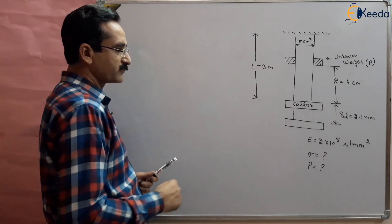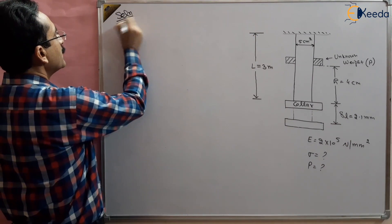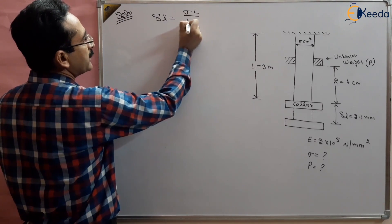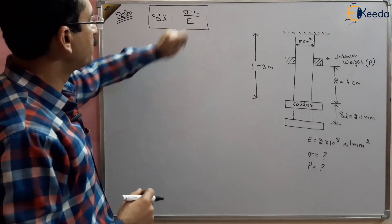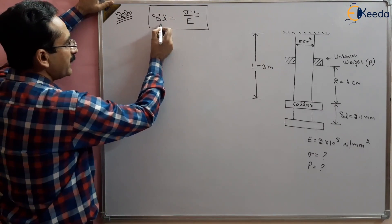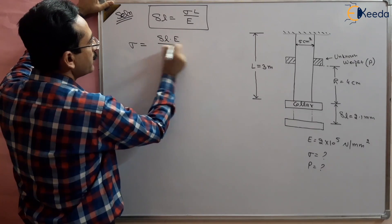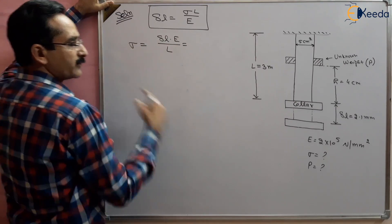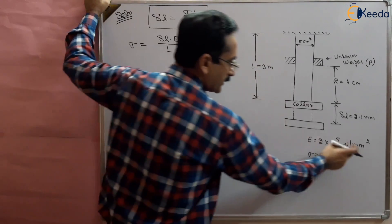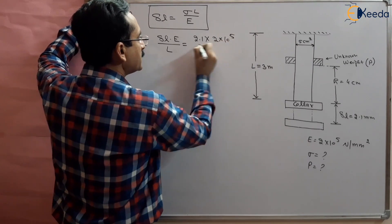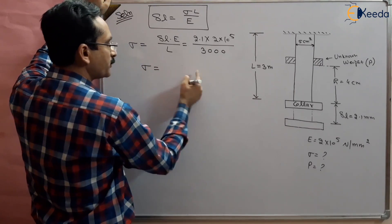From the basics of the first chapter, we know that the elongation in the bar is given by δl = σL/E. This is an important formula. Here σ is the instantaneous stress, δl is given, L is given, and E is given, so σ can be found out. Sigma equals δl × E divided by L. Taking δl as 2.1 mm, E as 2 × 10⁵ N/mm², and L as 3 m which is 3000 mm.